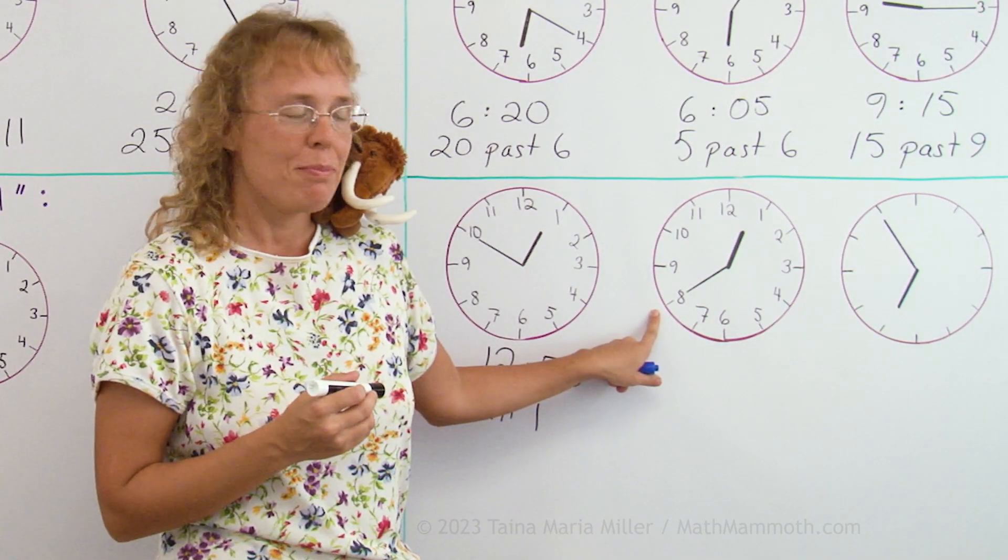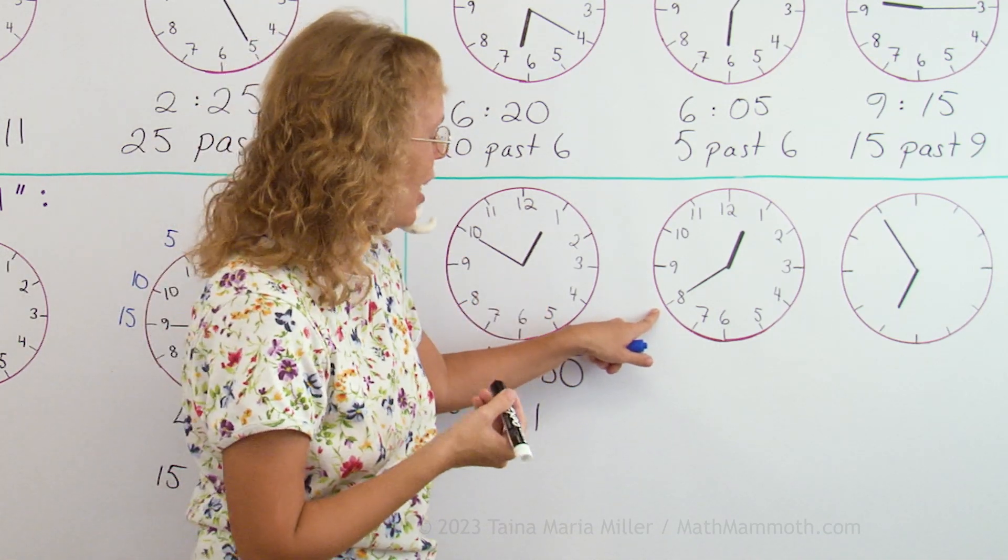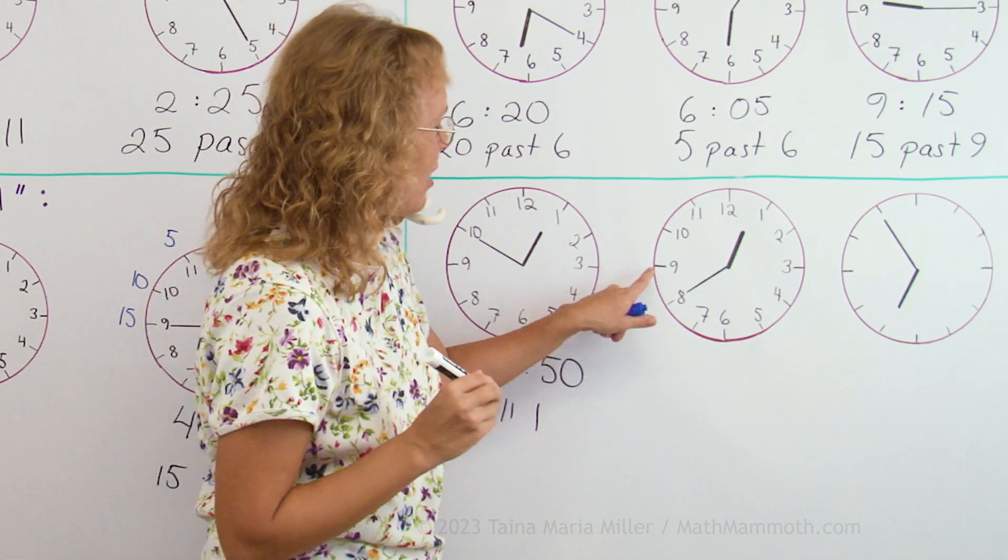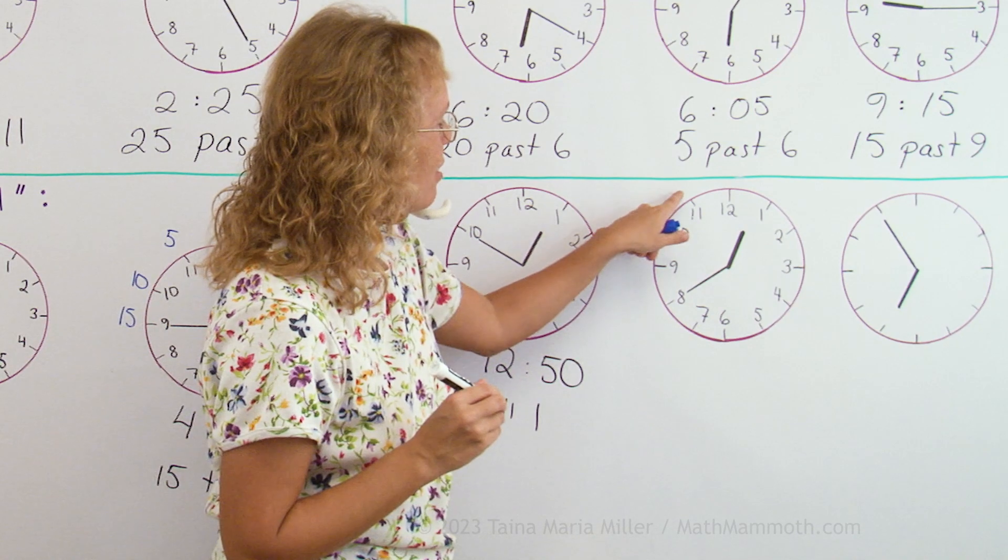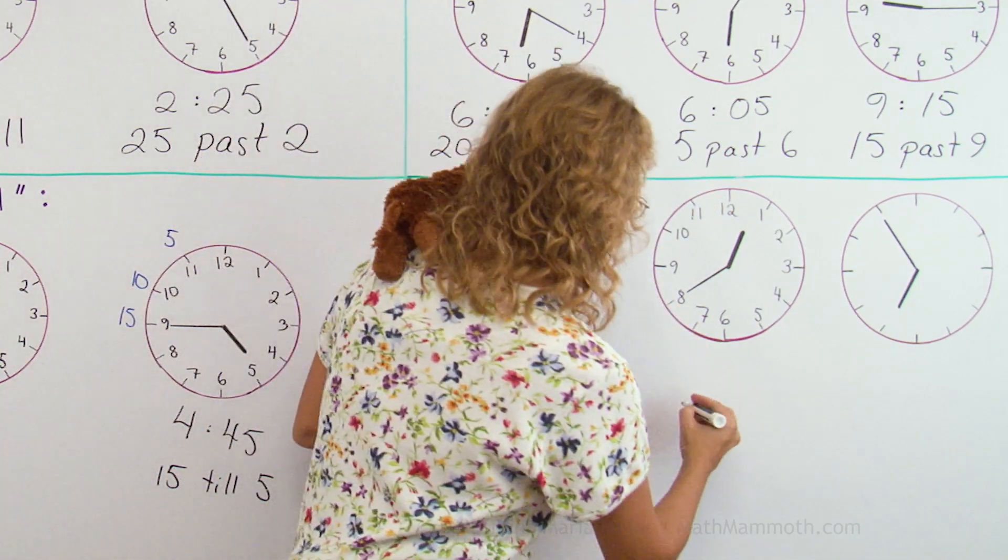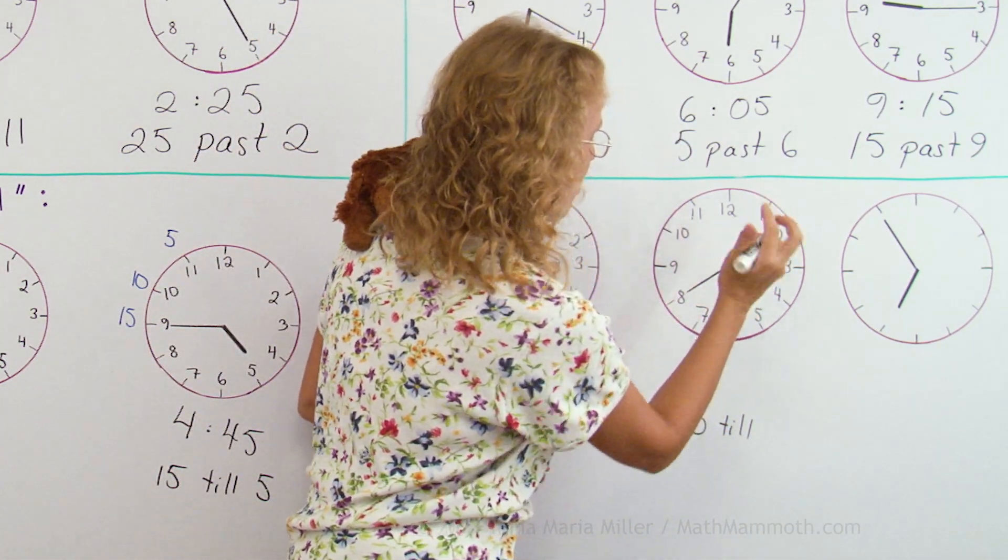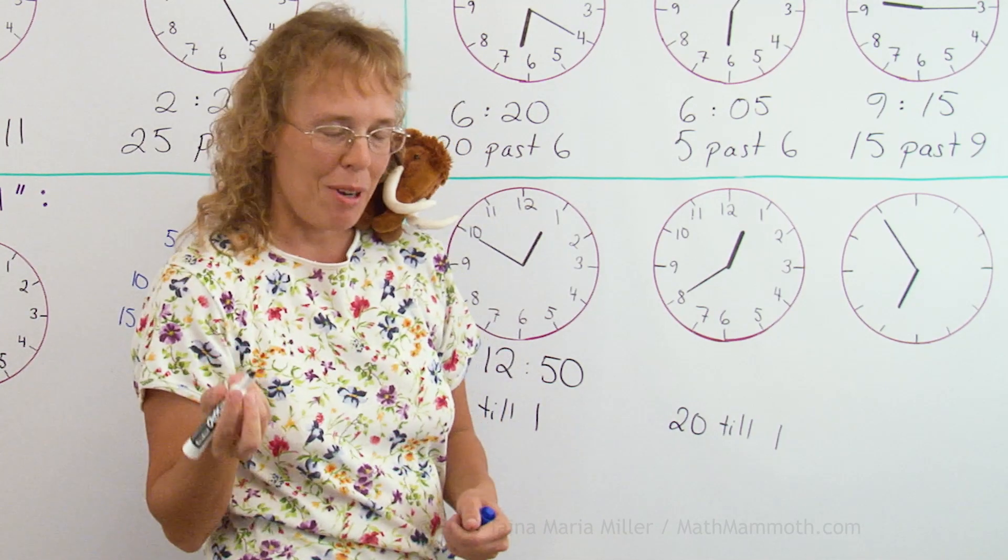Over here, minute hand is here. How many minutes till the next whole hour? We count by fives: 5, 10, 15, 20. 20 minutes till, till what hour? The hour hand is gonna be at 1, so 20 minutes till 1.